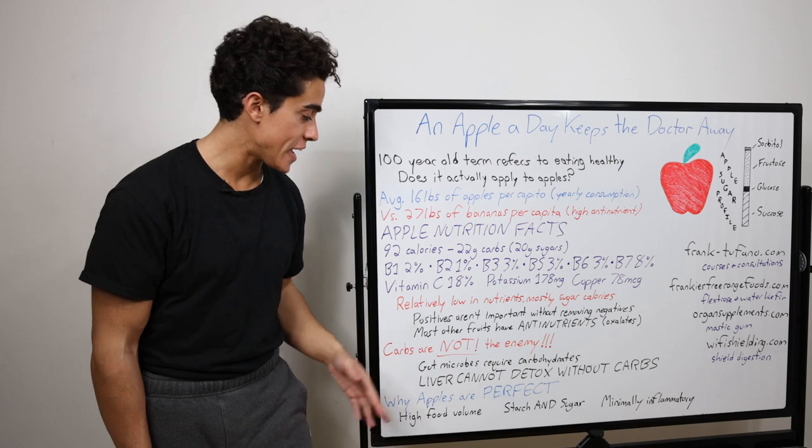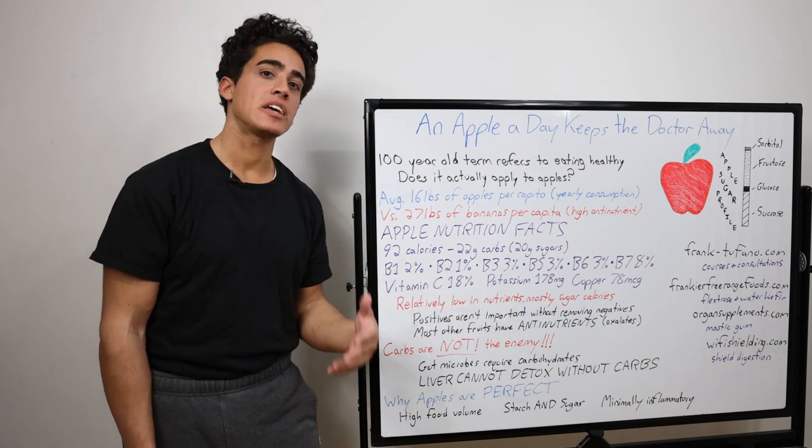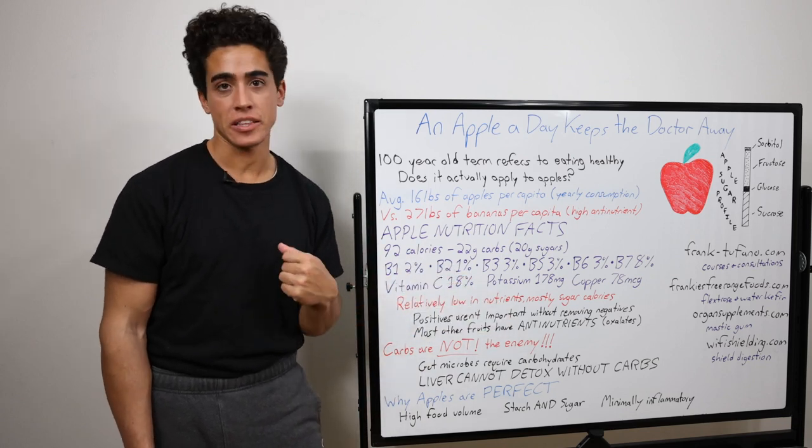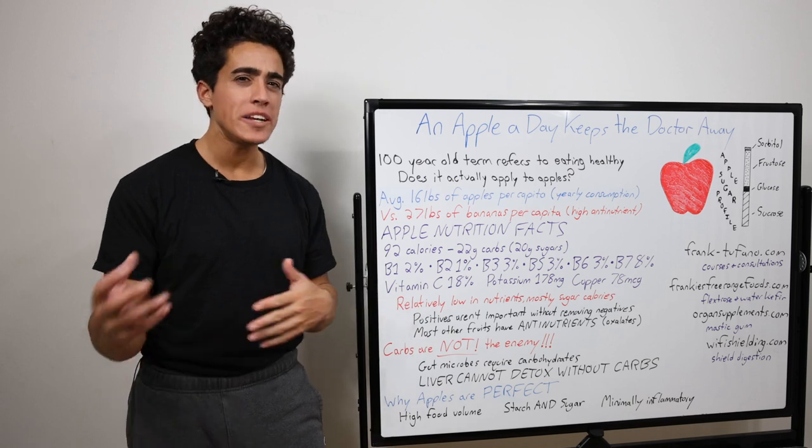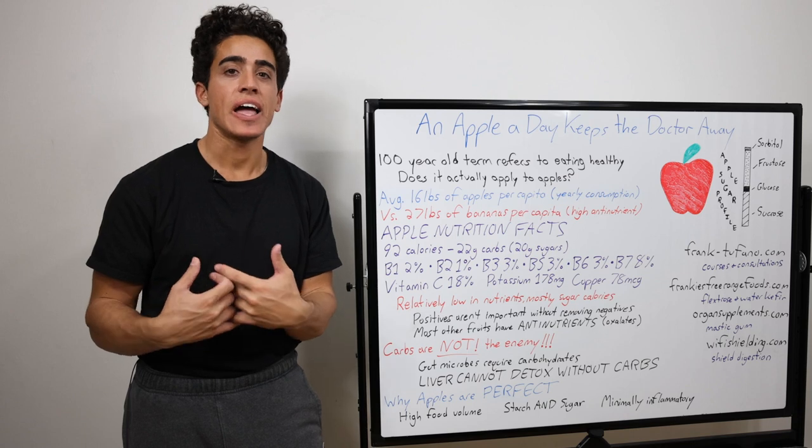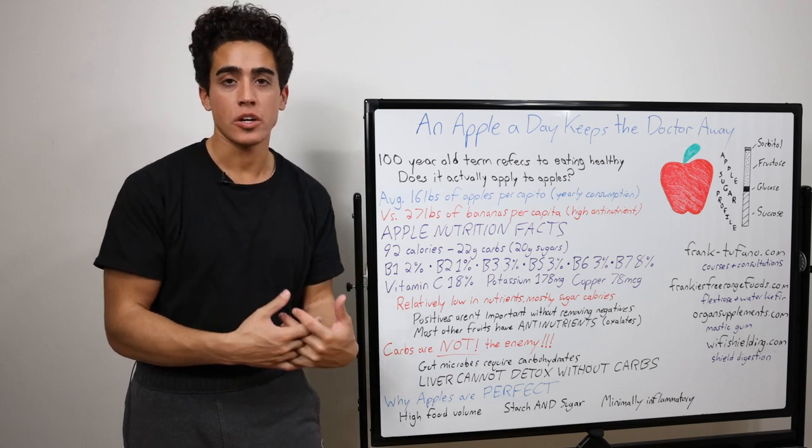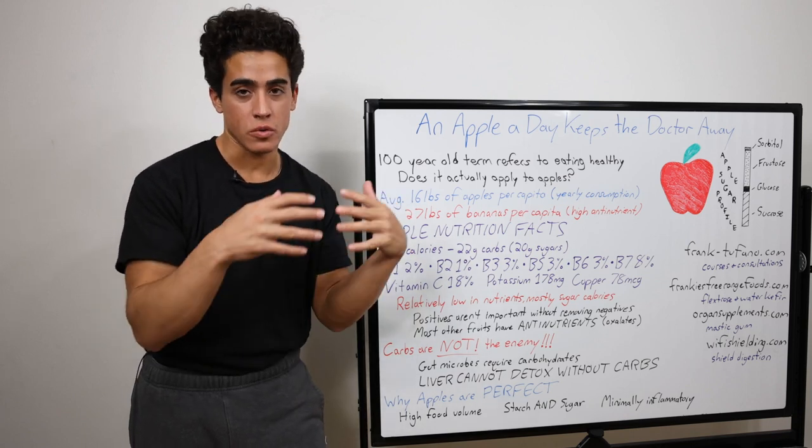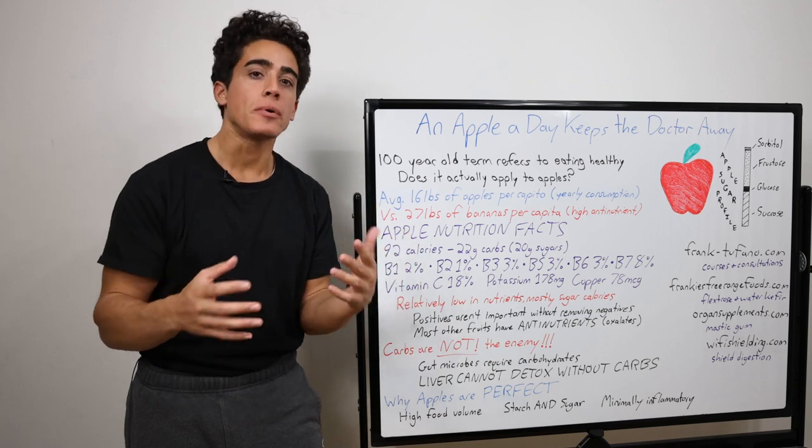Now, most people are focusing too much on adding positives instead of reducing the negatives in their diet and lifestyle. Why do you need more protein or B vitamins when your liver can't even detox excess iron stores? You have to walk before you can run. And that's where apples shine.